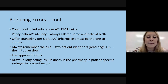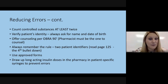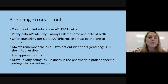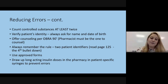Always verify the patient's identity by asking for their name and date of birth first. If two patients share the same name and date of birth, then ask for their address. Offer counseling per OBRA 90 — the pharmacist must be the one to counsel. Always remember the rule: two patient identifiers — name and date of birth, address, or phone number.